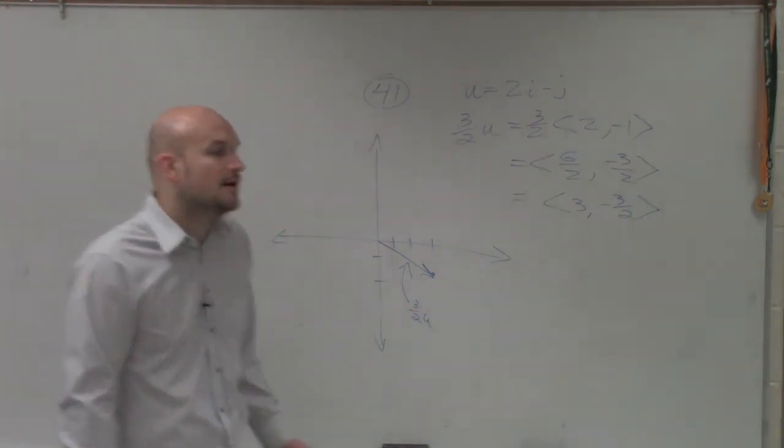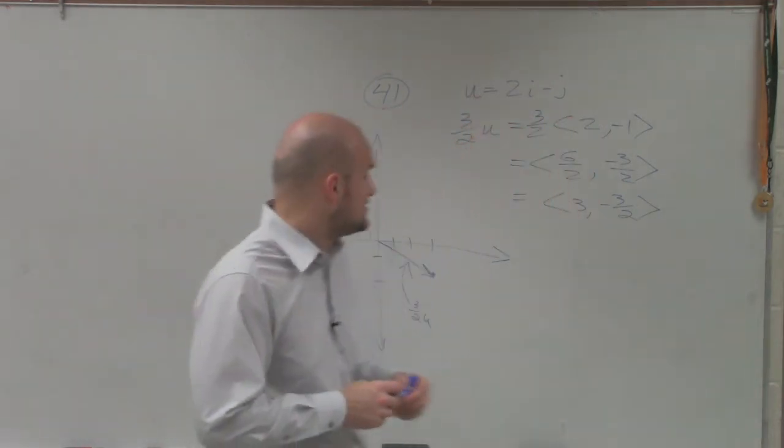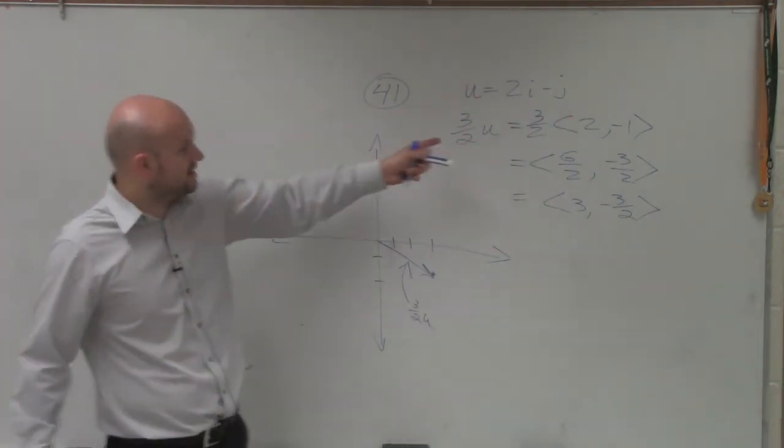That's your vector, 3, negative 1. Well, let's go and write this in as how the vectors look, OK? So how these vectors look, again, let's just write in.